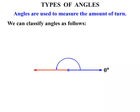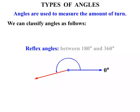Now we can go further. We keep going around. We're now into reflex angles, and they are between 180 degrees and 360 degrees.